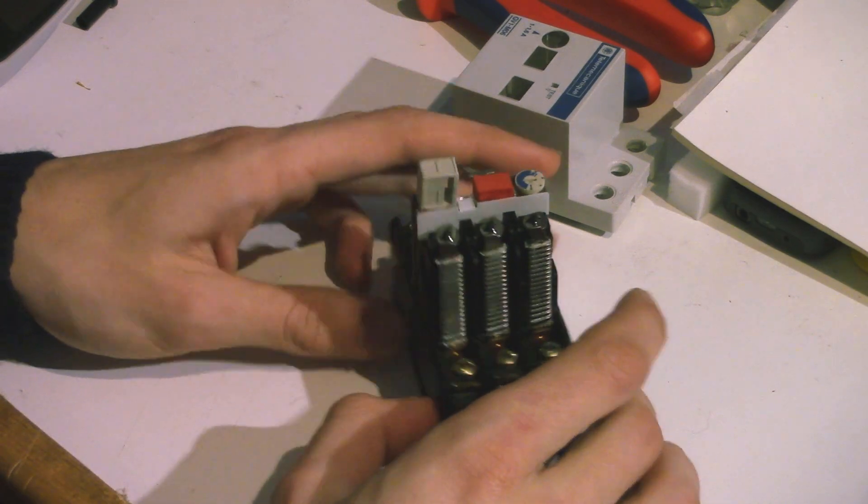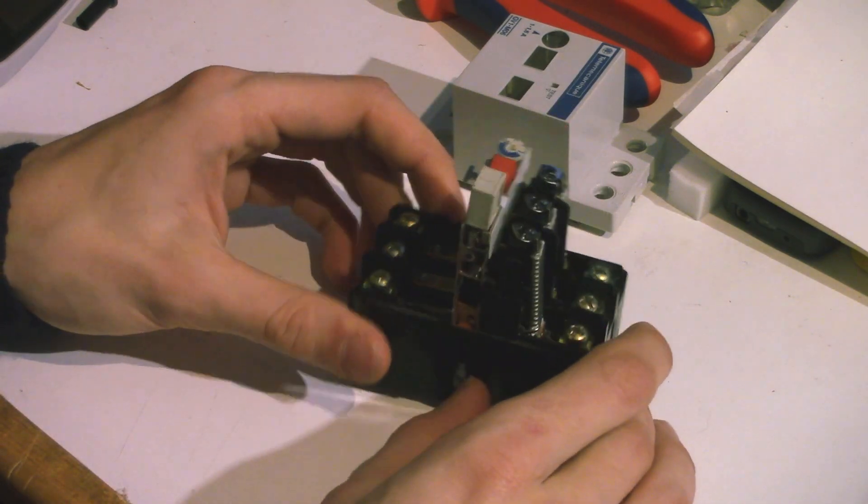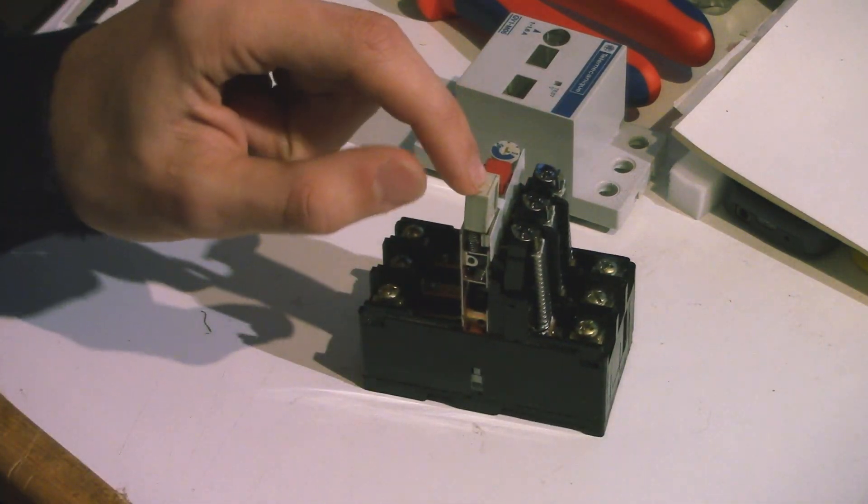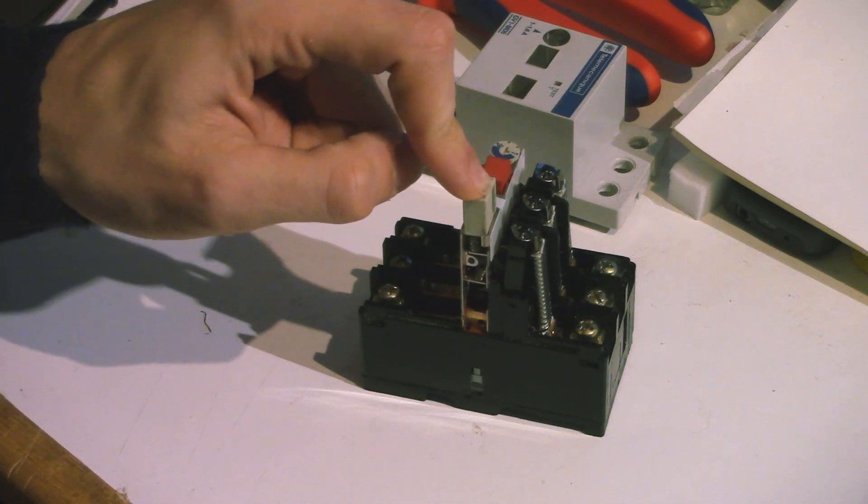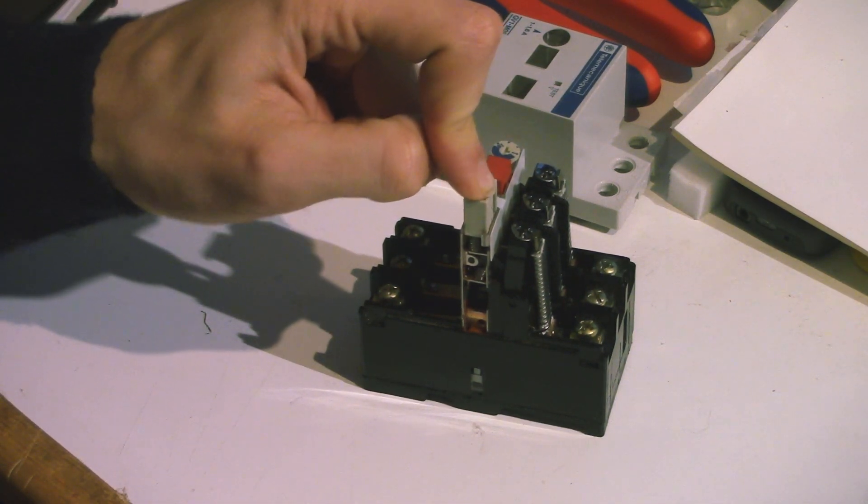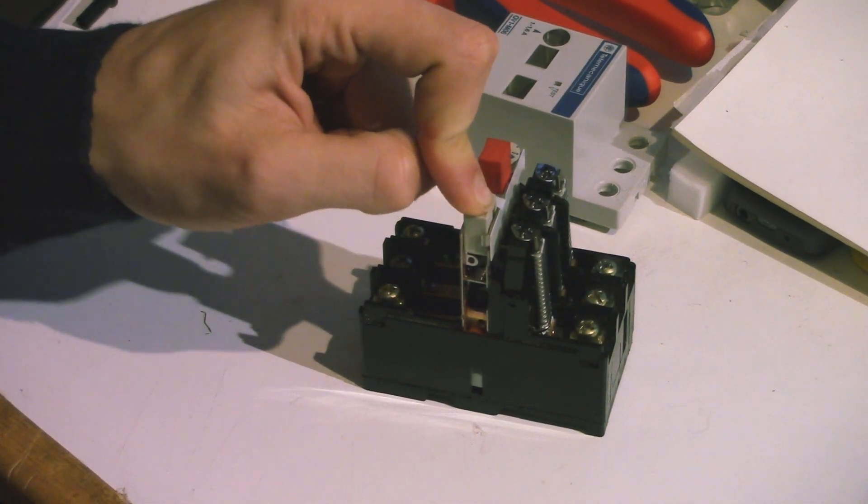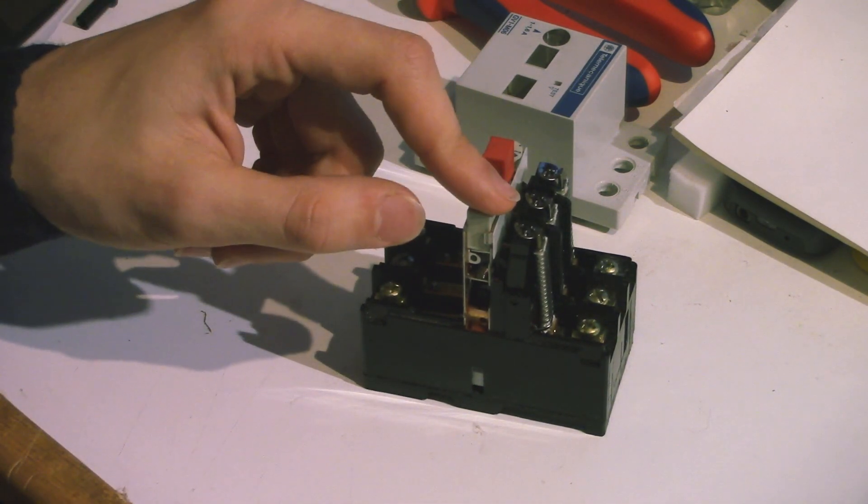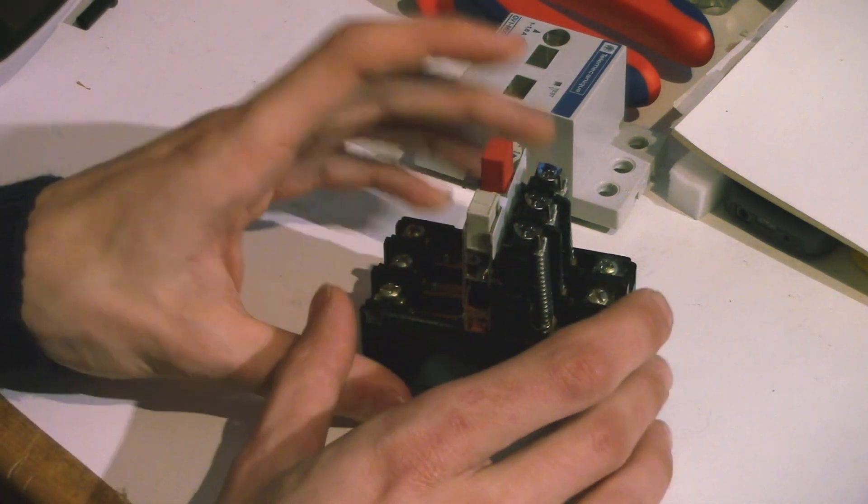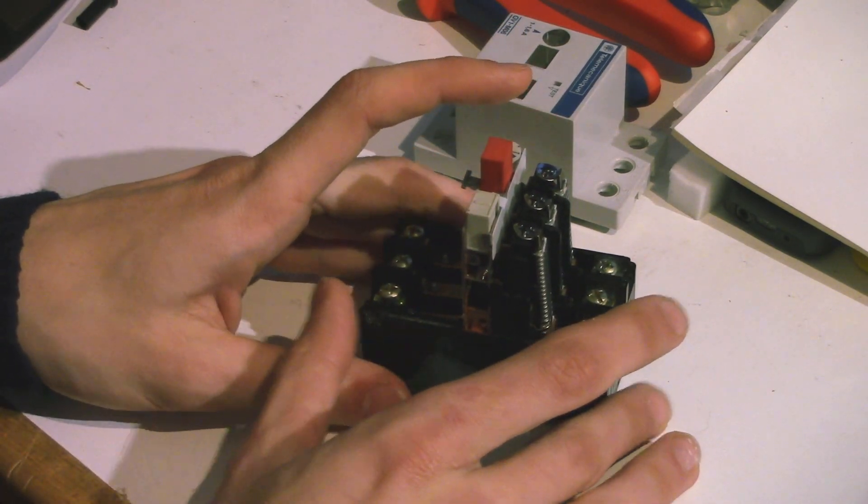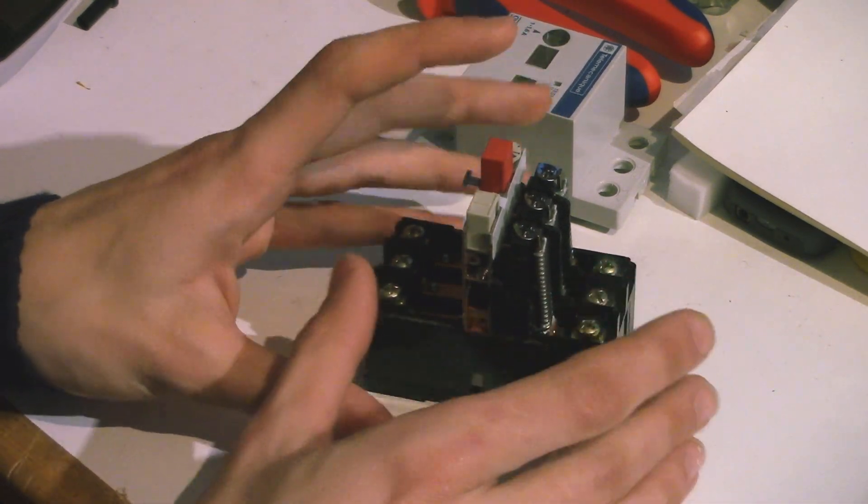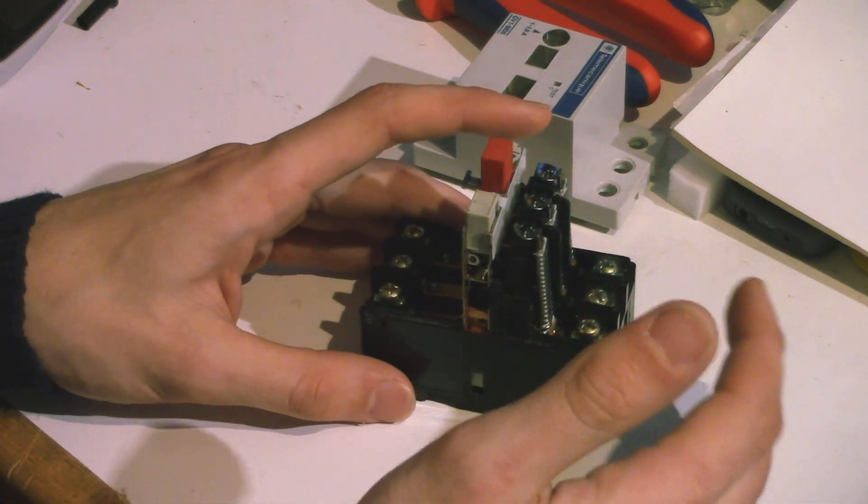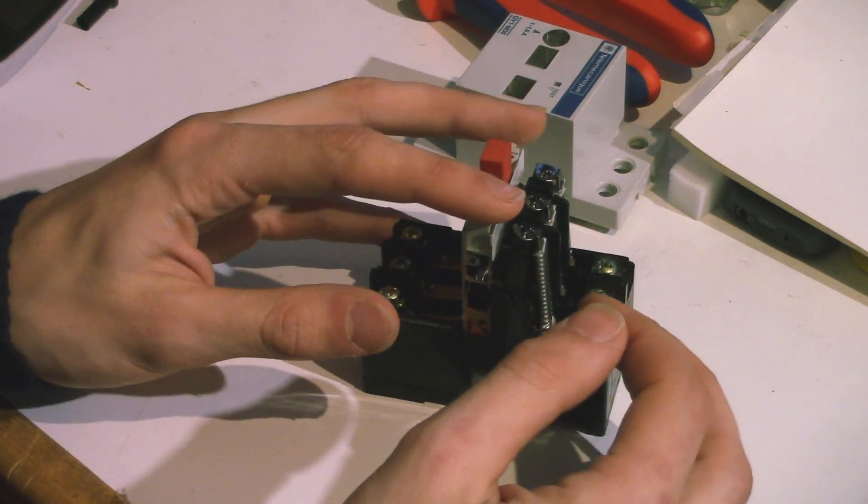So this looks like a pretty complicated mechanism, and it kind of is actually. So the first thing I'd like to point out is that it's spring-loaded. So turning it on, as you can see, requires a bit of force, because when you turn it on, when you close the switch, that actually loads a spring. And that's a very important detail in the operation of a breaker switch. It's spring-loaded. That's the reason why it's able to open so quickly and so violently.